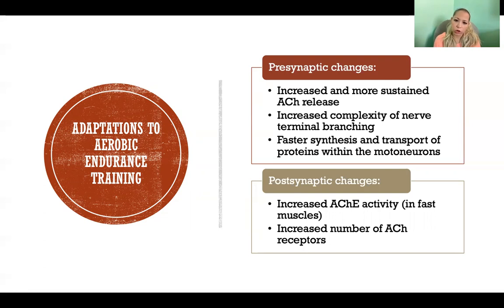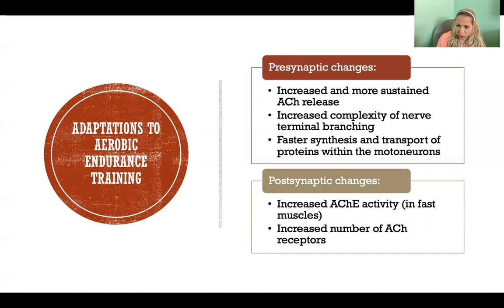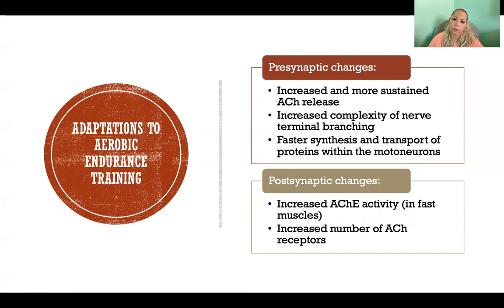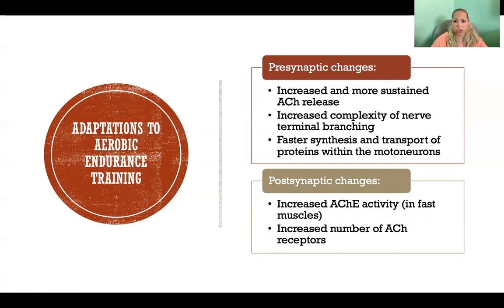We also have increased complexity of nerve terminal branching — more branches sprout, allowing for more terminals, so that we can have more neuromuscular junctions with that same motor neuron where it's interacting with the muscle fibers it innervates. We'll also have faster synthesis and transport of specific proteins within the motor neurons, because those proteins help to develop and grow the neuromuscular junction to facilitate more synapses being sent to cause more contraction.